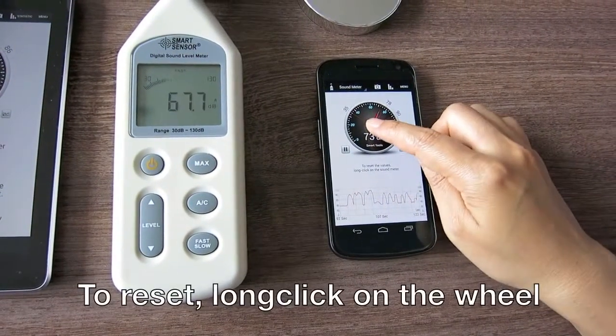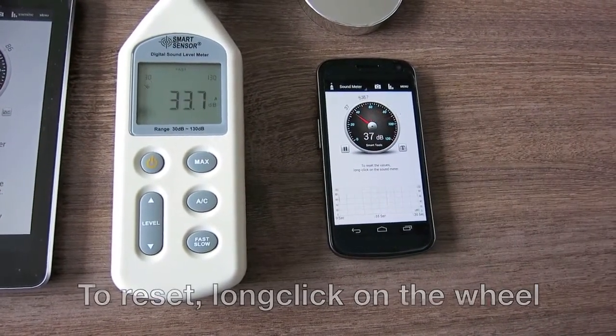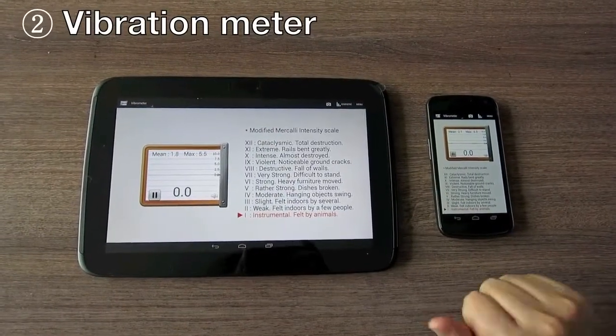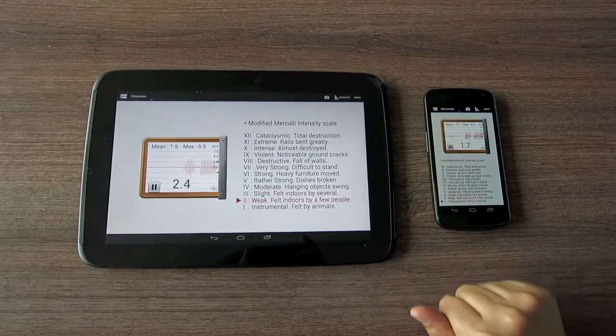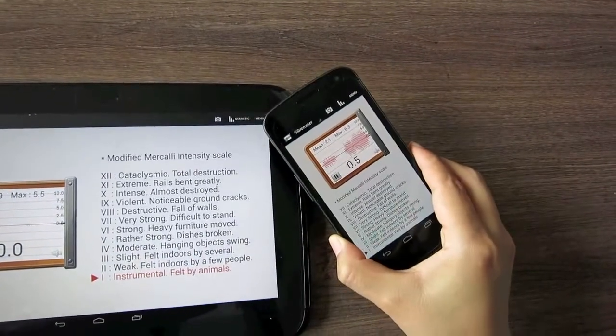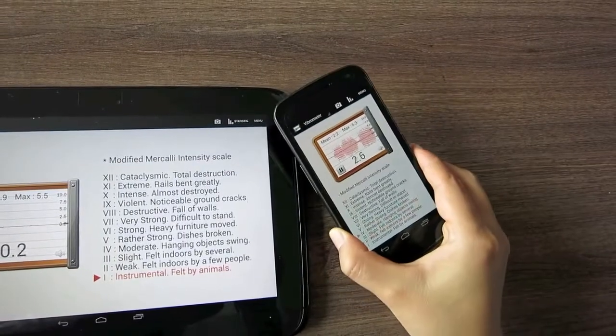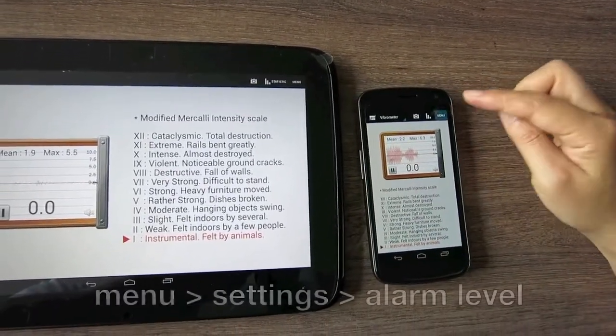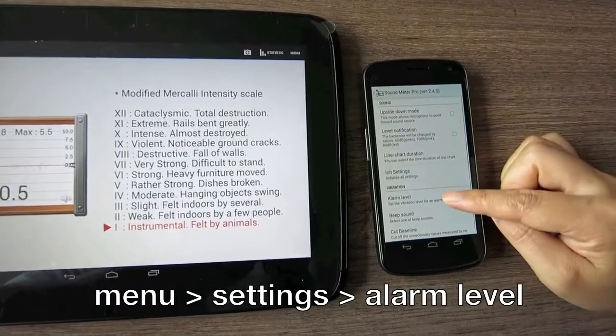To reset, long click on the wheel. Vibration meter. Menu setting, alarm level.